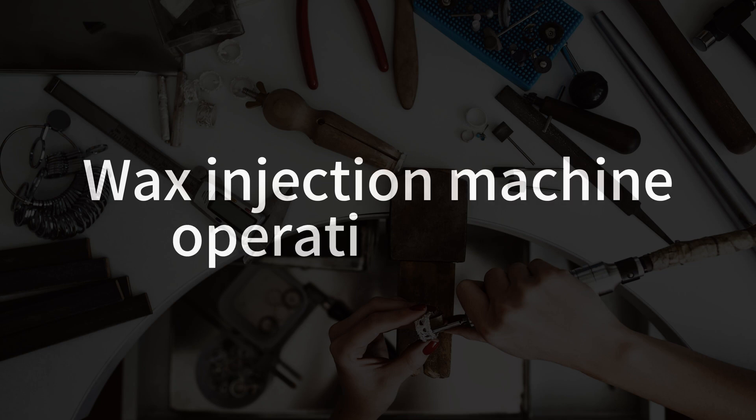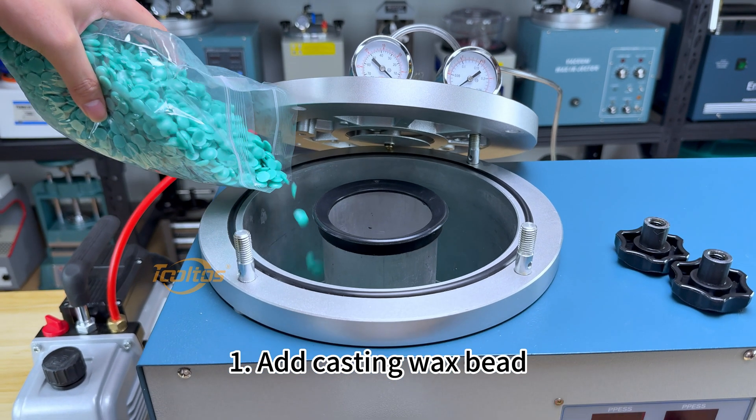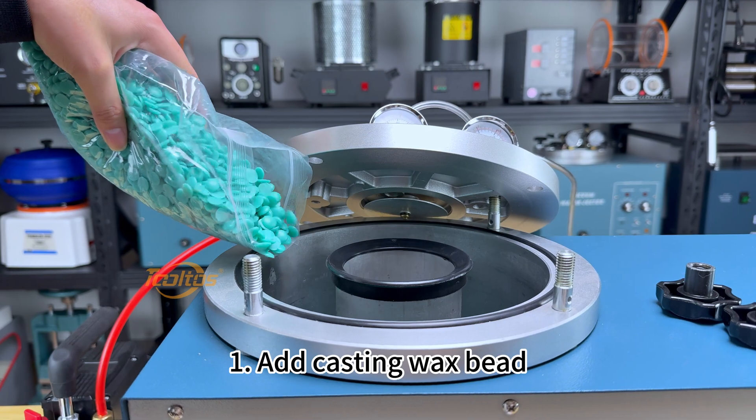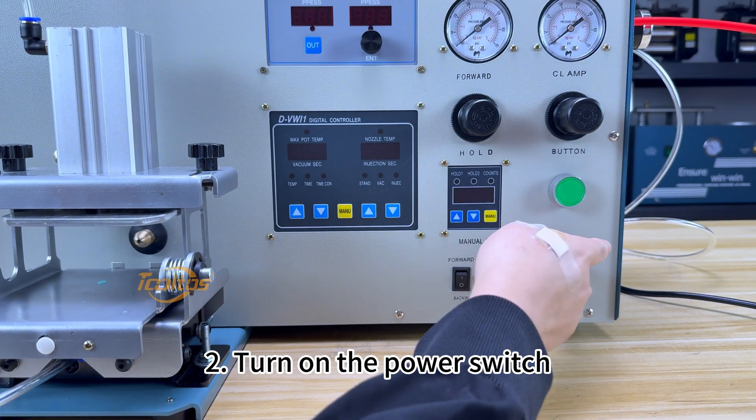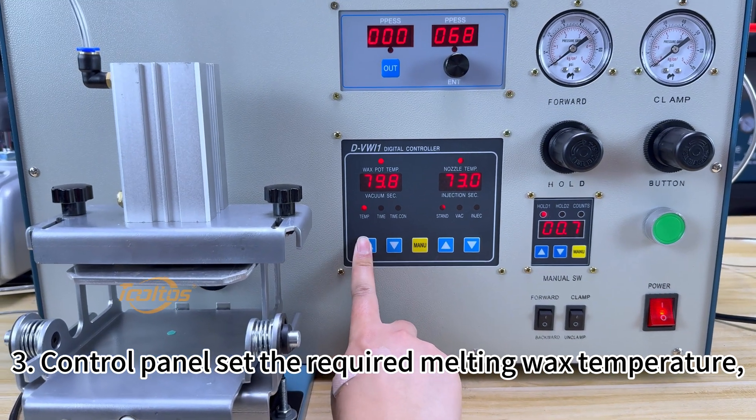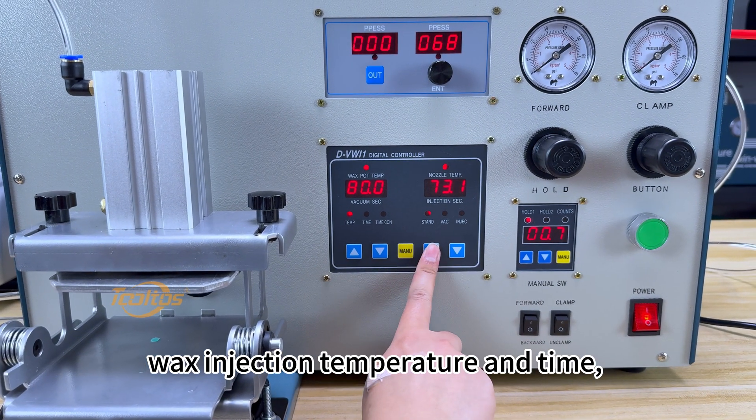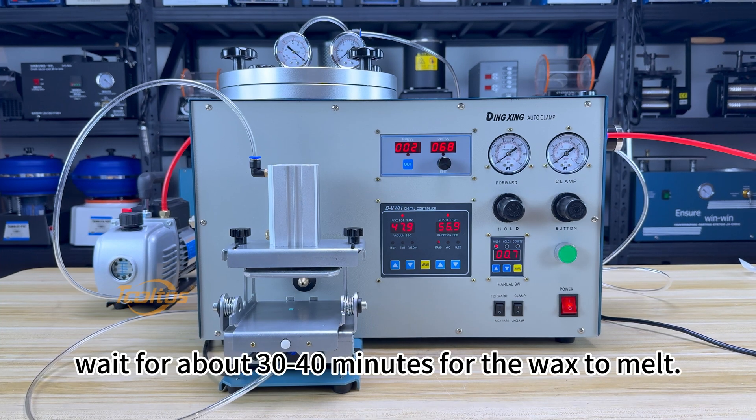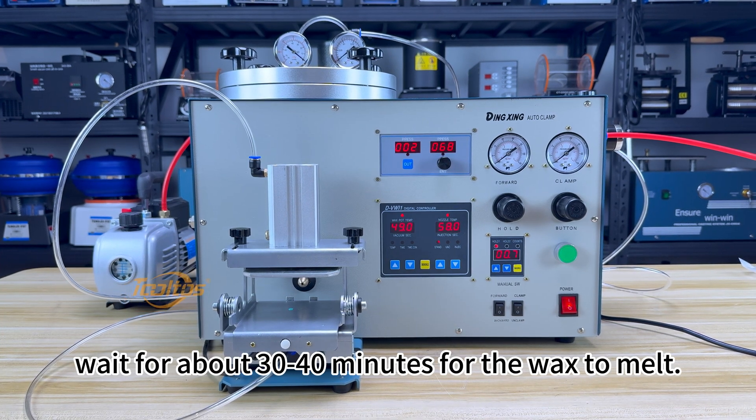Wax injection machine operation steps: 1. Add casting wax. 2. Turn on the power switch. 3. On the control panel, set the required melting wax temperature, wax injection temperature, and time. Wait for about 30 to 40 minutes for the wax to melt.